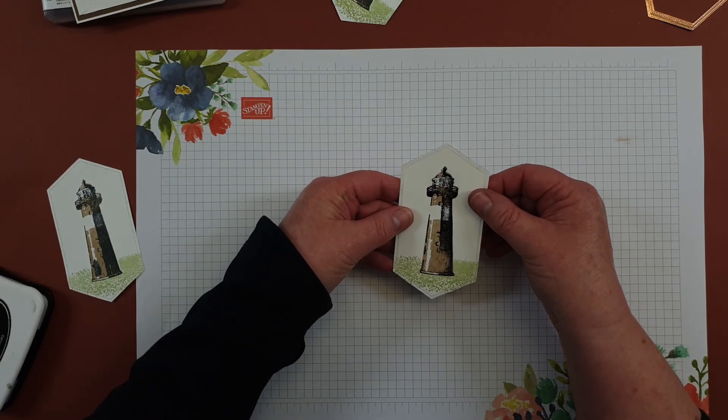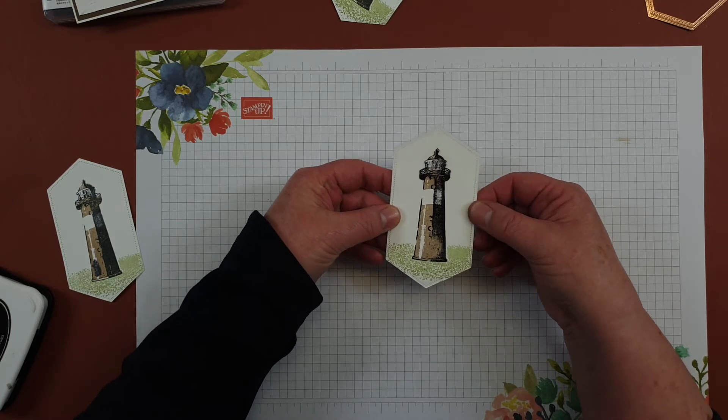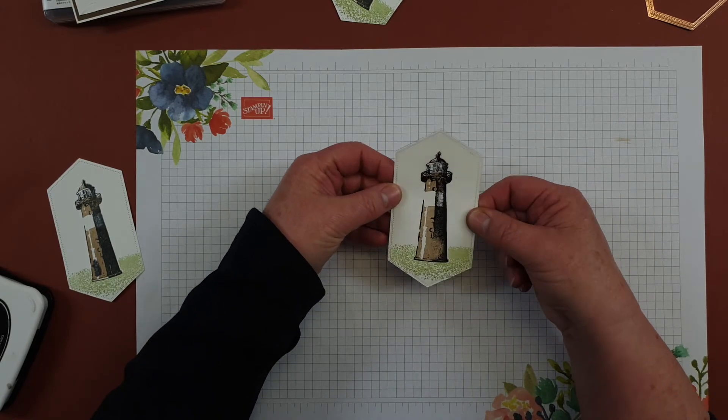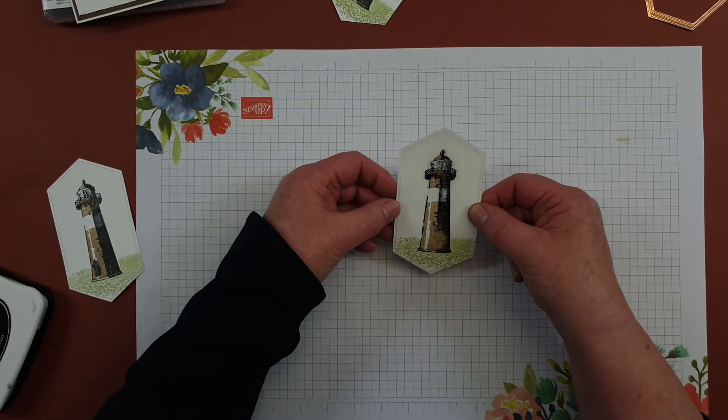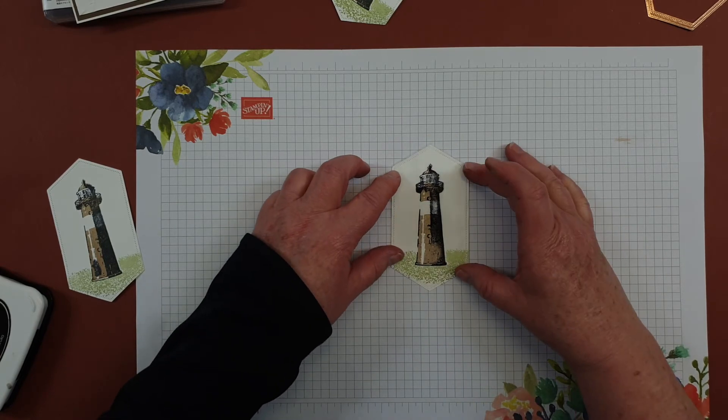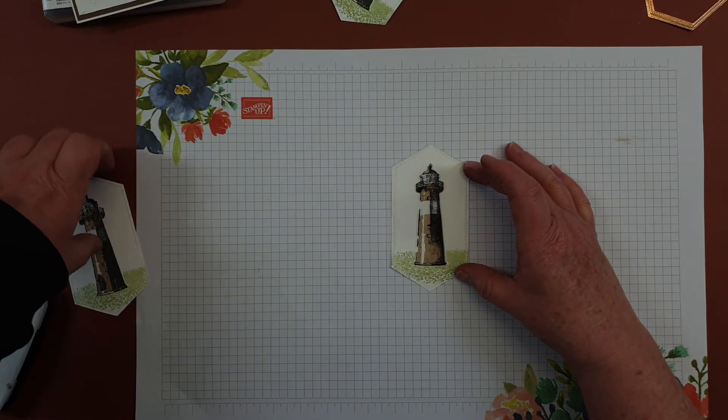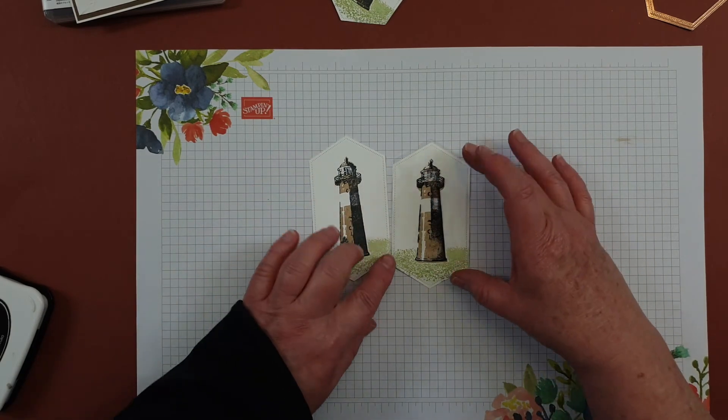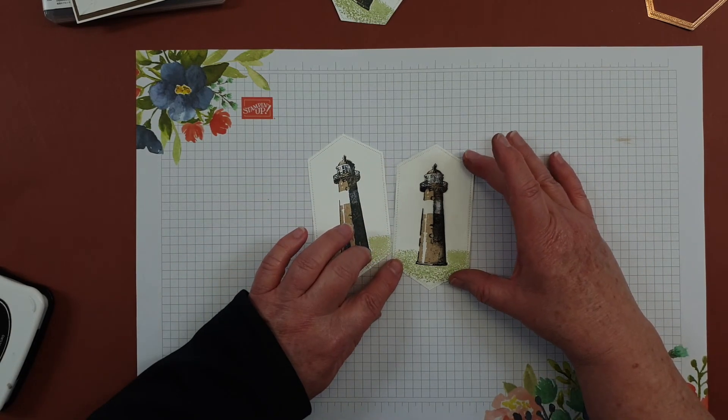So we'll need to use some Tombow liquid adhesive glue to stick that onto there and it gives me just a little bit more of a 3D background compared to this one.